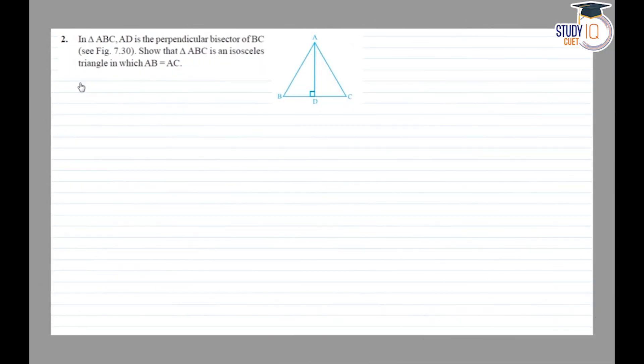Class 9th MCRD Chapter 7 Exercise 7.2 Question No. 2. In triangle ABC, AD is the perpendicular bisector of side BC. Show that triangle ABC is an isosceles triangle in which AB is equal to AC.